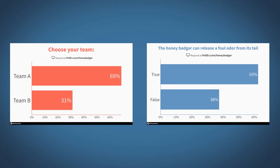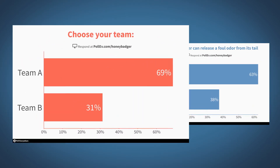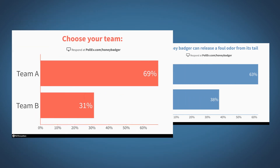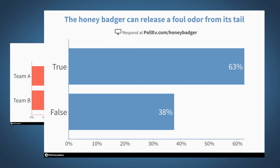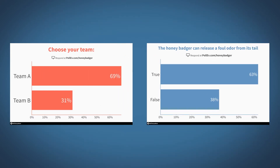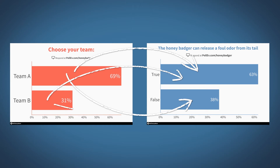For my honey badger example, I created a poll asking the audience which team they wanted to join, and another asking them my trivia question. As you can see, the audience responded to both polls. What's not clear is whether the people on teams A or B answered true or false.